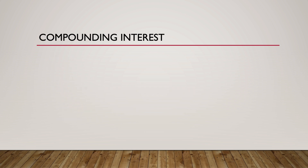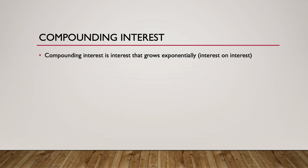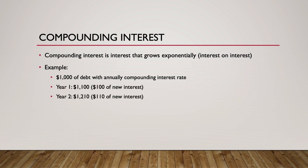When borrowing or lending, it is important to consider the effect of compounding interest. Compounding means that interest is charged on top of interest. For example, $1,000 of debt at an annually compounding interest rate will result in total debt of $1,100 at year 1, $1,210 at year 2, $1,331 at year 3, and so on. Notice that the amount of interest added to the principal grows exponentially each year: first $100, then $110, then $121, and so on. After 30 years, the total amount of debt would be $17,449. Compounding interest can powerfully increase your savings as a lender, or powerfully increase your debt as a borrower.